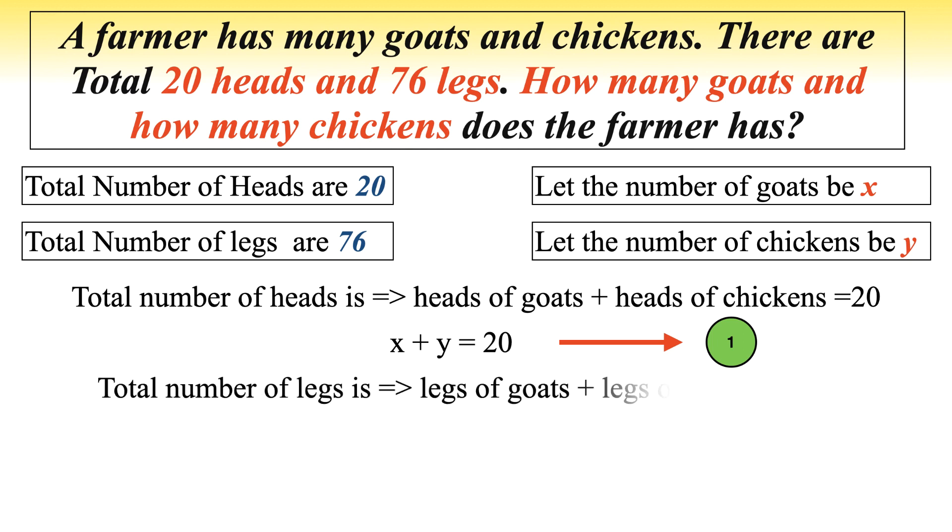Also we know from the puzzle, total number of legs is legs of goats plus legs of chickens which equals 76. Now the equation becomes 4x plus 2y equals 76.